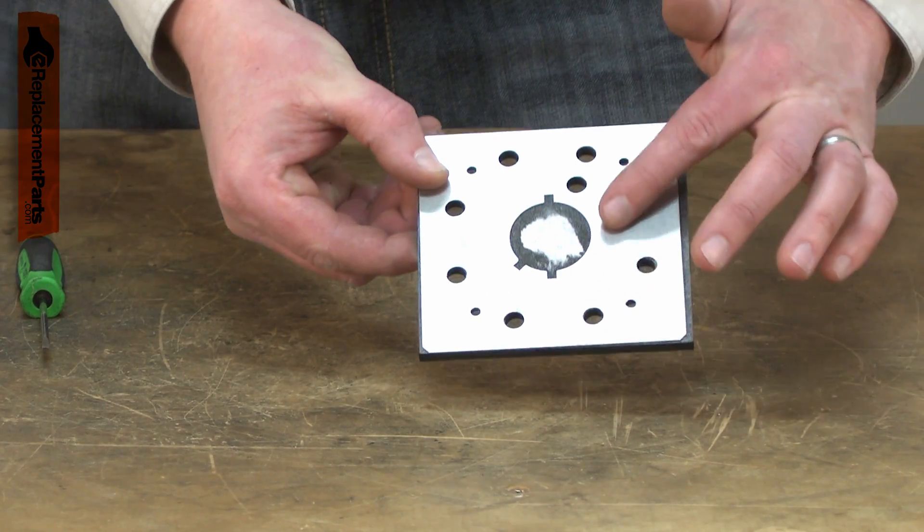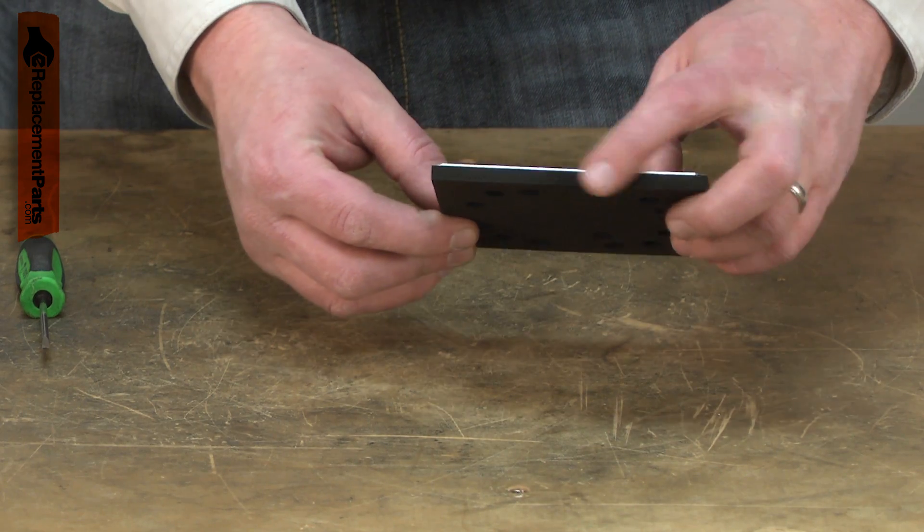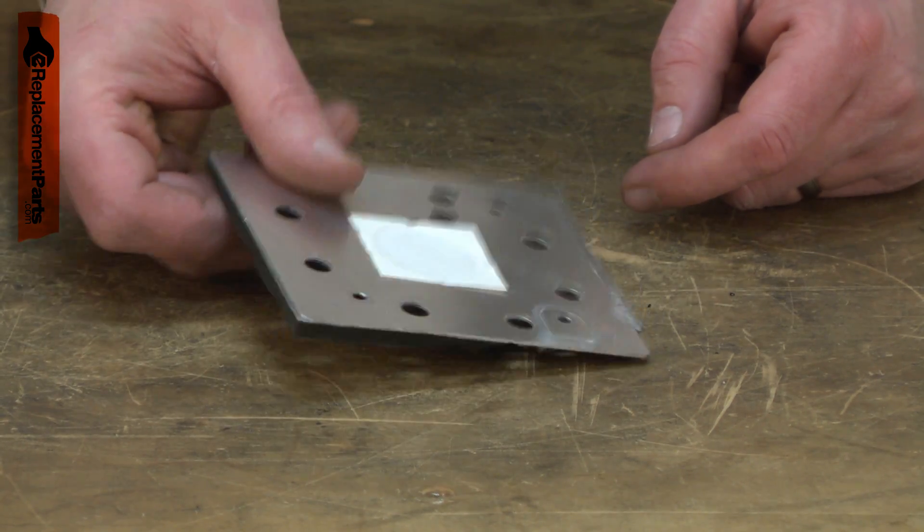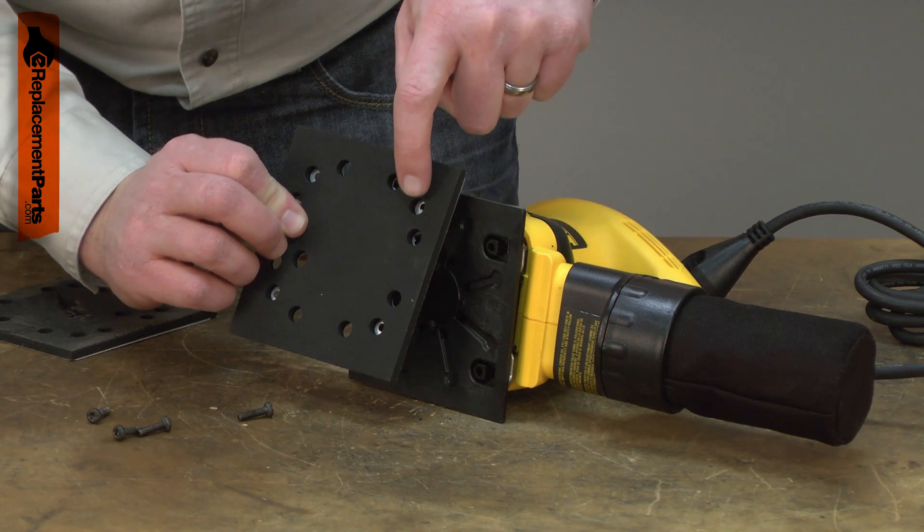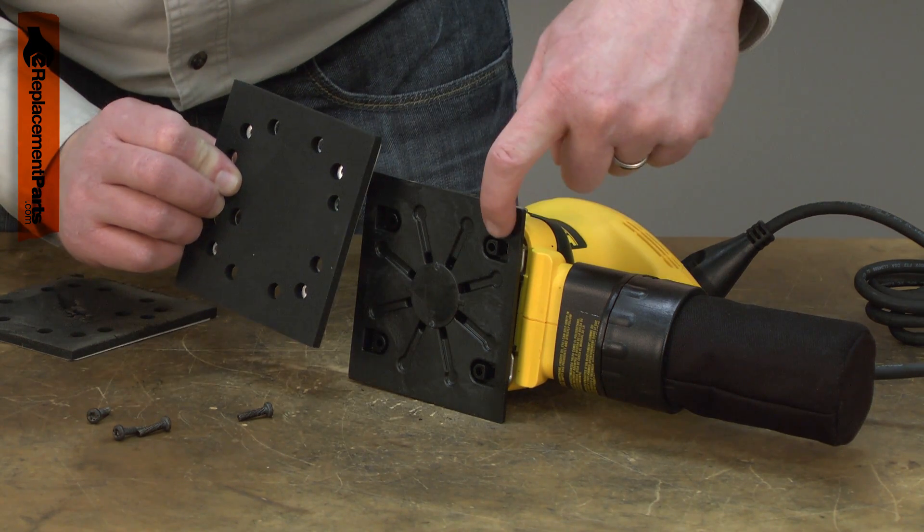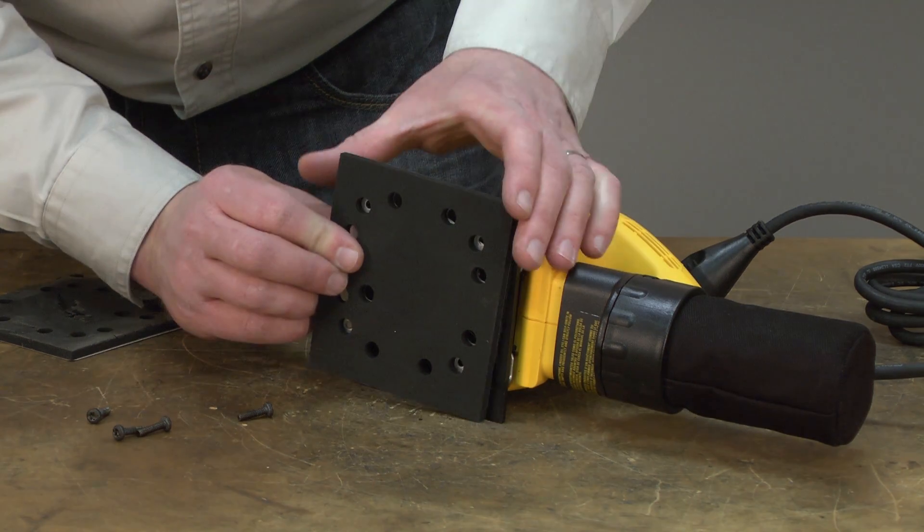If the pad wears down to the point that the metal plate is in contact with the paper, the sander will tend to bounce and move around erratically. Replacing a worn sander pad and backing plate is an easy repair that you can do yourself and I'm going to show you how.